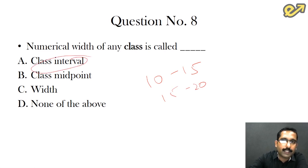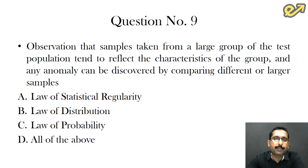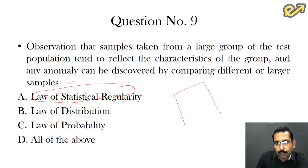Ninth question: observation that samples taken from a large group of test population tend to reflect the characteristics of a group, and any anomaly can be discovered by comparing different or larger samples. Which law is this? There is only one law in the first chapter that we study in statistics, and that is the law of statistical regularity. It's very simple. This is the population that is available for us. You take a very small population, the chances of anomalies are more. You take a larger sized sample, then the chances of you going wrong is less. This is given in the law of statistical regularity.